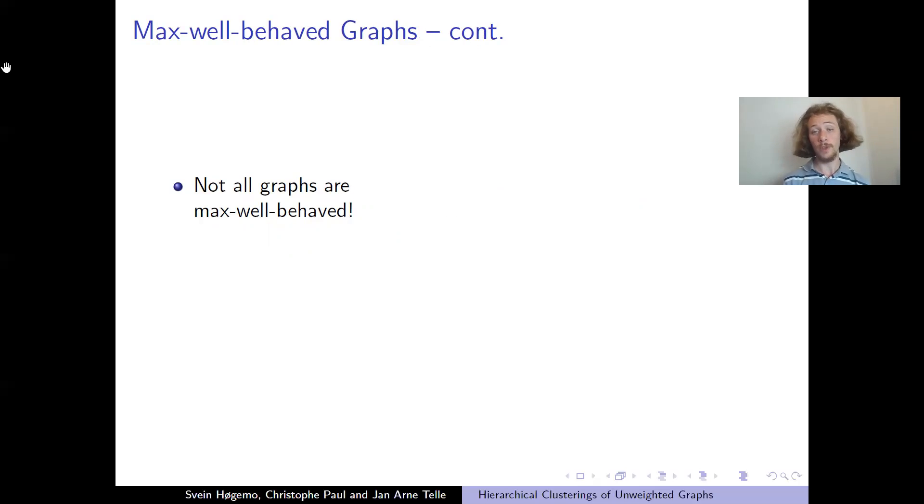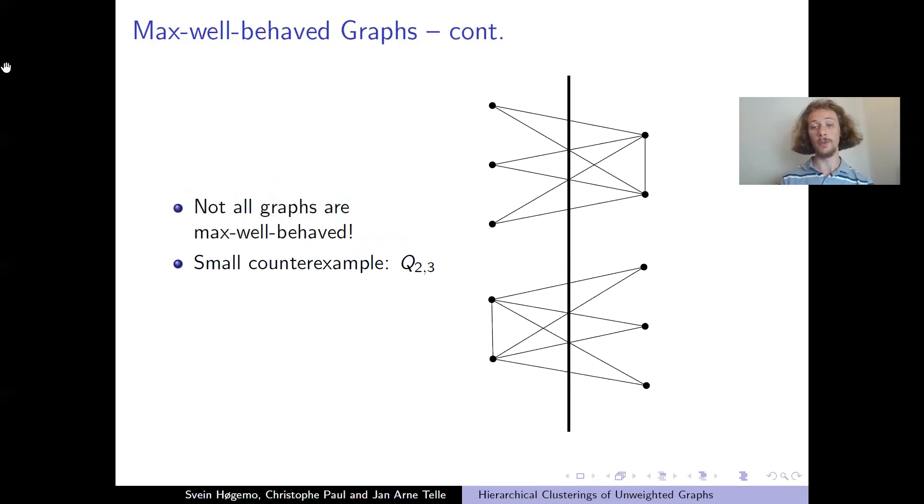What's interesting is that not all graphs have this property. Many graphs do. We can look at bipartite graphs. They must, of course, be max well-behaved because it's easy to maximize the cost on bipartite graphs. You just have all the edges at the top, split them apart, and the disjoint union of a bipartite graph is still bipartite. But not all graphs have this property. The smallest example I know is this complete split graph with a clique of two vertices and an independent set of three vertices. And if you look at two copies of this, then the best way to split it is you flip one copy.